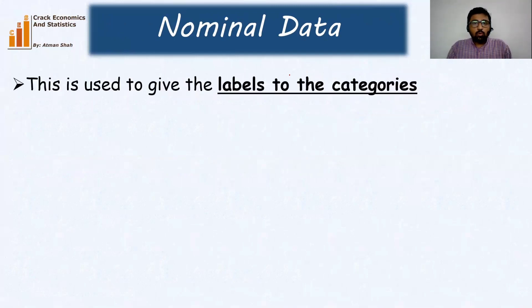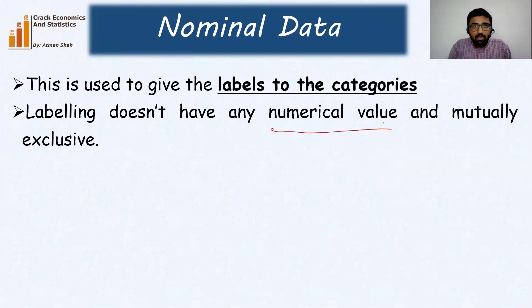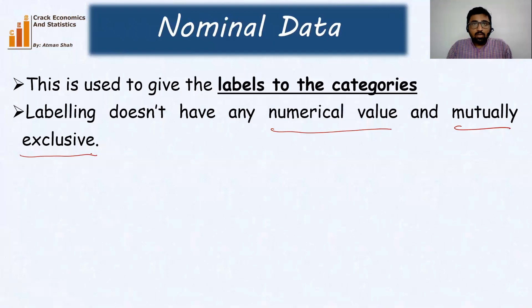Nominal data is used to give labels and names to the categories, and the labeling does not have any numerical value. When we assign a code to a nominal variable, that code does not have any numerical value. The codes are mutually exclusive, which means we cannot give the same code to more than one category.